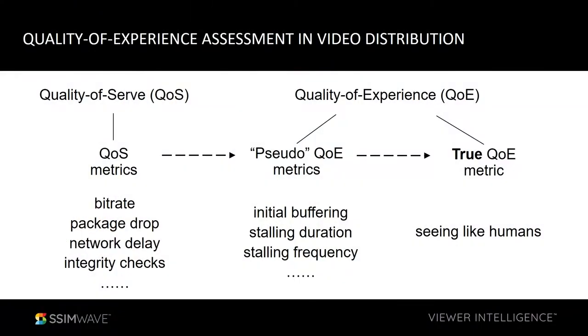The traditional way people do quality assurance of such a system starts with QoS-kind of measures. When we talk about QoS, it's traditionally more concentrated on the network side of the distribution, with certain popular parameters — for example, how big the bandwidth is for transmitting the video, and also things like packet error rate, network delay, and integrity checks.